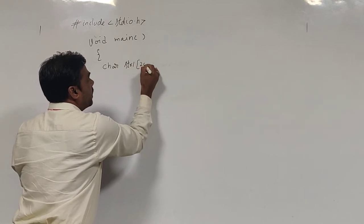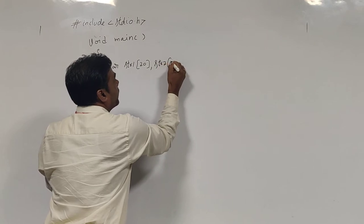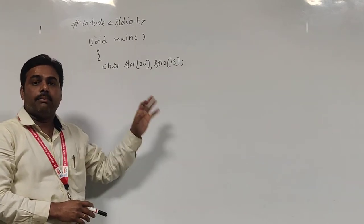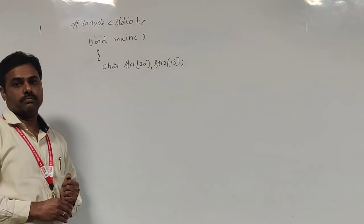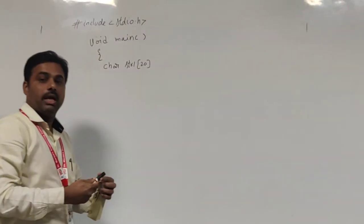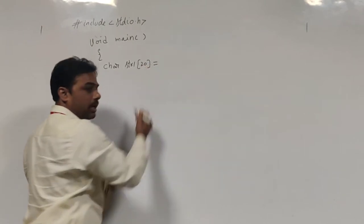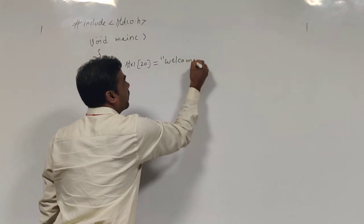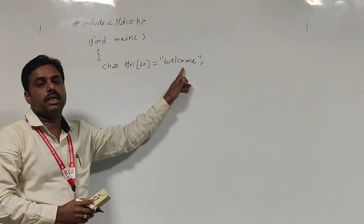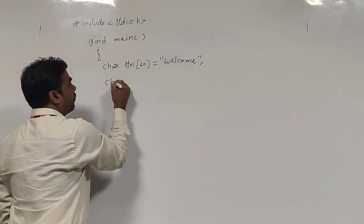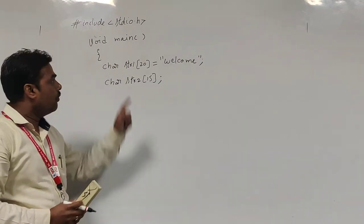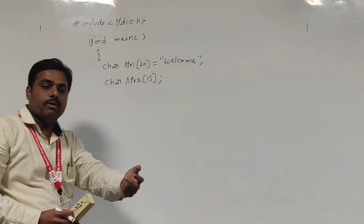How to declare the character array? With the help of the character array str. I am taking two strings: str1 and str2. The reason I am taking two strings is that string 1's value will be assigned at the time of declaration, and string 2's value is supposed to be read from the keyboard. String 1 is assigned with the help of the assignment operator at the time of declaration itself, putting the value in double quotes — "Welcome". String 2 is declared with size 15.